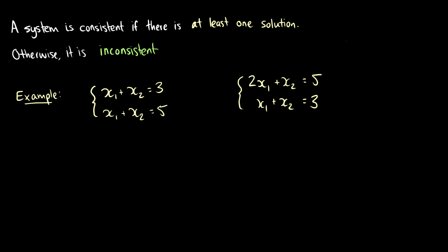So a system is consistent if we have at least one solution. Otherwise, it's going to be inconsistent.